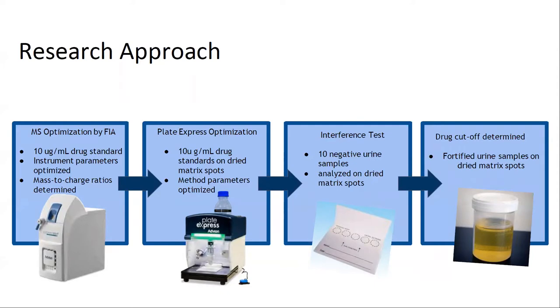The cutoff of the drug in methanol and dried matrix spots was determined by analyzing different concentrations of drugs and analyzing the ion peak area and intensity of the peaks produced. After the cutoff of each drug in methanol was determined, the cutoff of the drugs in authentic urine samples was determined. Ten authentic urine samples were fortified at different concentrations and analyzed to determine the cutoff of each drug.